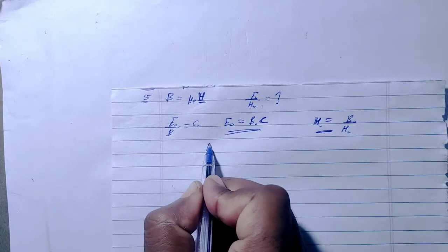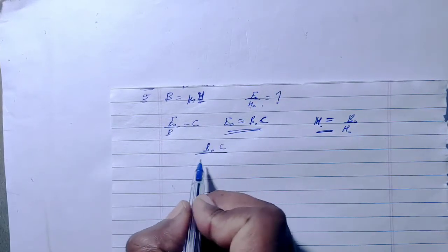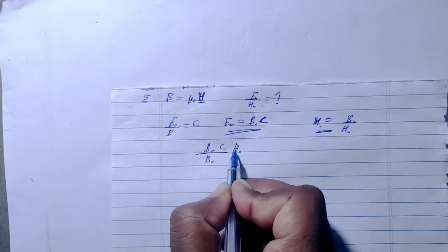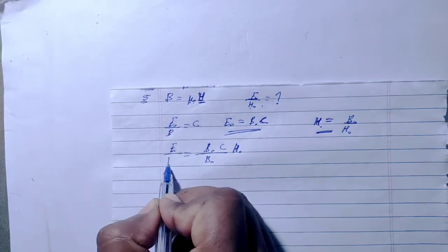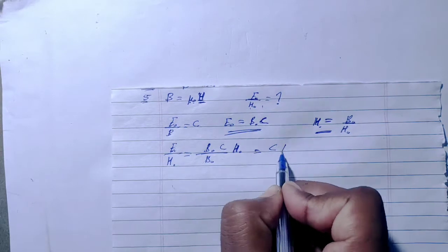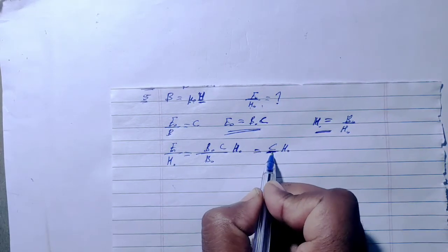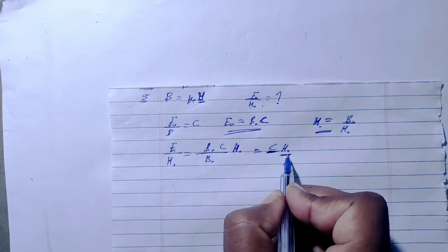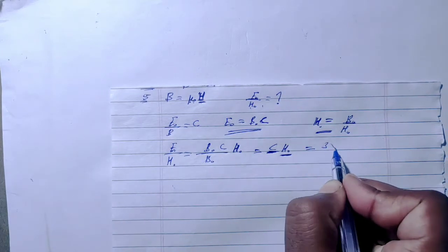Here B equals mu times H, so E upon H equals E upon B times mu. The B terms cancel out and you can find E by H. This simplifies to speed of light c times mu — mu is the magnetic permeability for air, which is a universal constant.